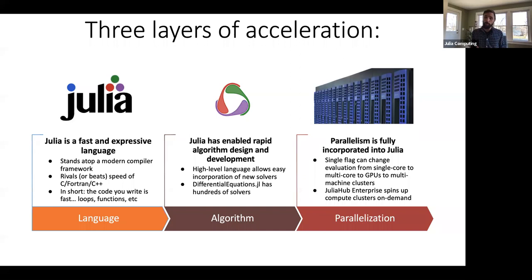What this means — the summary of that table — is that we're able to see three different layers of acceleration when it comes to implementing your models in Julia. First, Julia itself is a modern language and is itself fast and expressive. It sits atop a modern compiler framework — the same compiler framework that Apple and Google use for their languages — and rivals or even beats the speed of C, Fortran, or C++. In short, the code that you write can be fast. It applies to your own functions, it applies to your own for loops — you no longer need to be afraid of for loops — and it applies to the libraries that you use that are implemented in Julia.